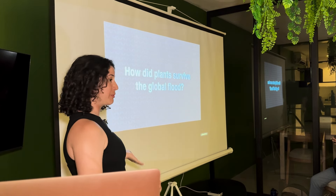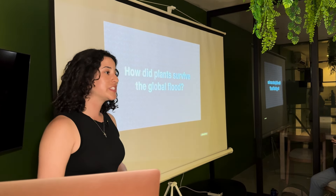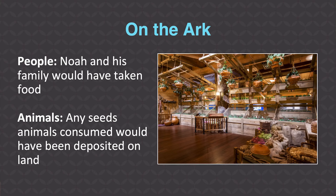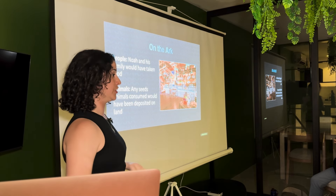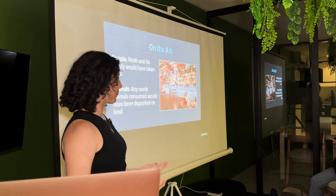God did provide plants with unique mechanisms to survive various conditions during a global flood. The first mechanism is on the ark. Though God did not command Noah to take plants, we can assume that since people ate plant foods, Noah and his family would have taken plant foods on the ark for themselves and for the animals to eat — whether through a garden or preserved plant foods.